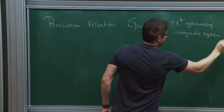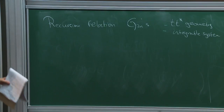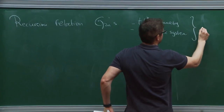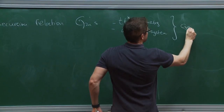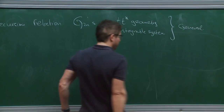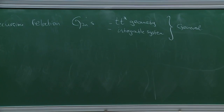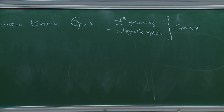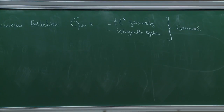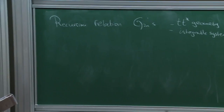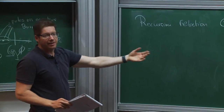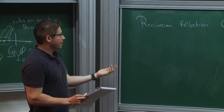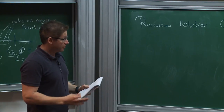This is general — not just for SU(2). Inside every N=2 superconformal field theory in four dimensions, the Coulomb branch operators obey the recursion relations of tt* geometry, and they're always an integrable system. In some cases, this integrable system can be identified with a classical integrable system that appears in textbooks, and in some cases we don't know what the integrable system is.